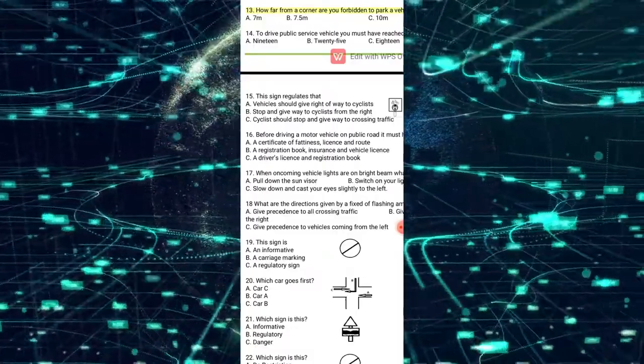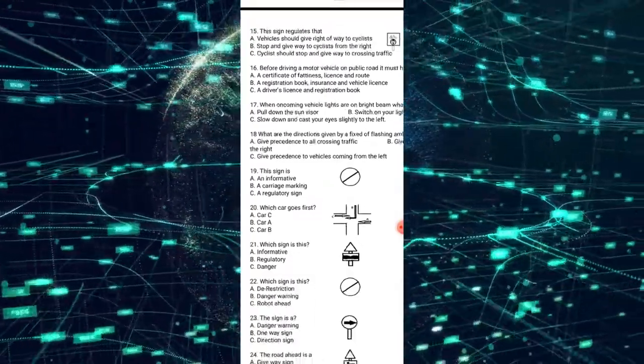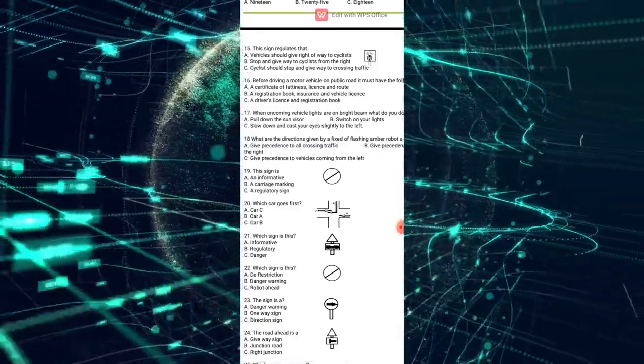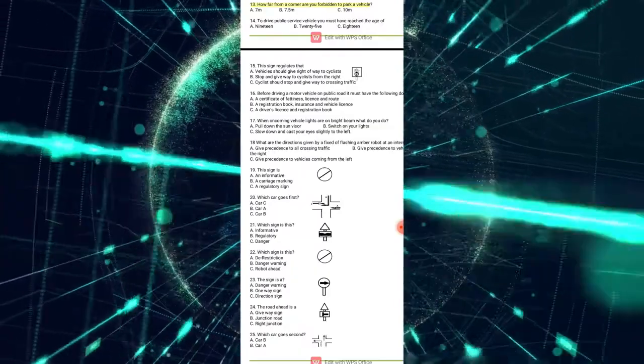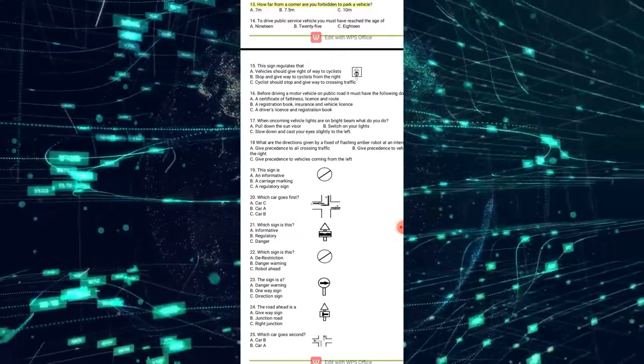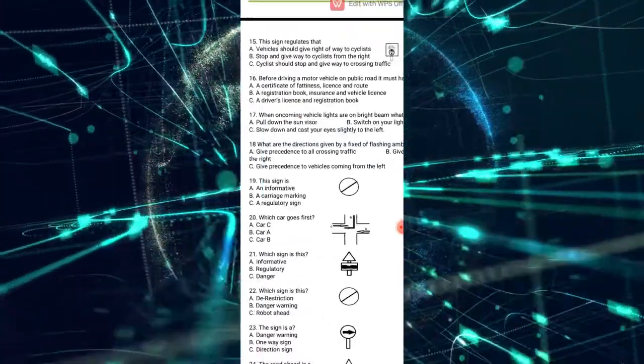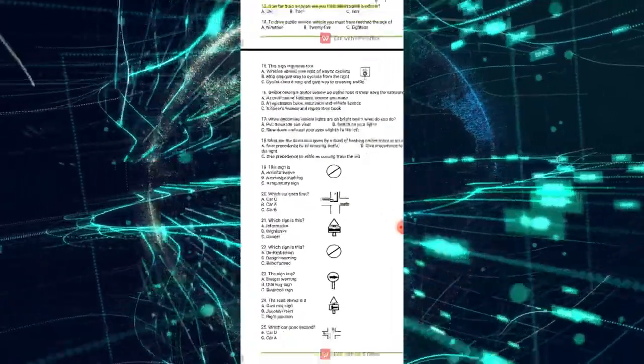Number 17: when oncoming vehicle lights are on, what do you do? A says you pull down the sun visor. B says switch on your lights. C says slow down and cast your eyes slightly to the left. The correct answer is C — you slow down and cast your eyes slightly to the left.